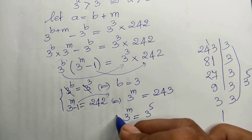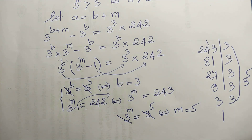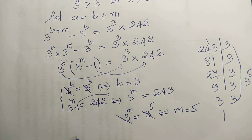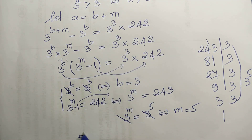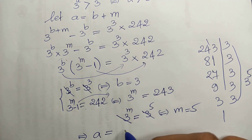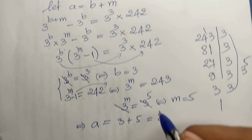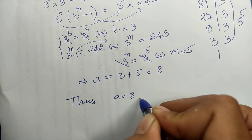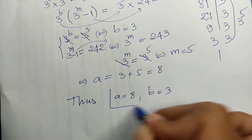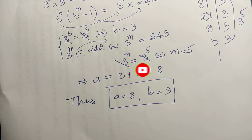Since a equals b plus m, we get a equals 3 plus 5, so a equals 8. And b equals 3. Those are our solutions: a equals 8 and b equals 3. If you like my videos, please don't forget to subscribe my channel for more exciting videos. Goodbye!